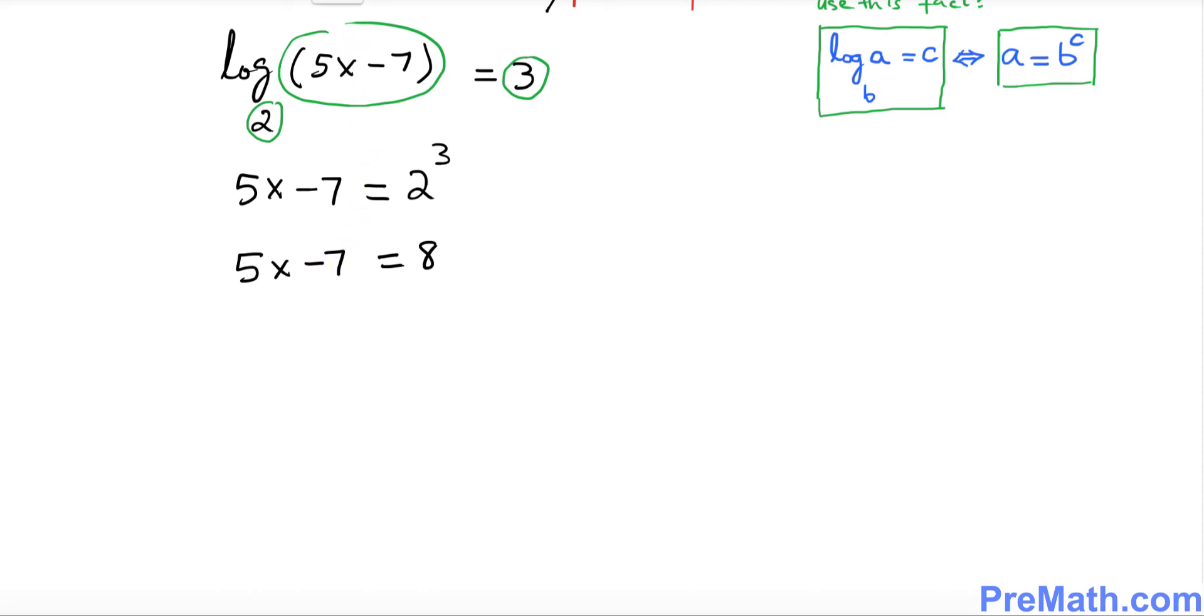Now we want to solve for x. So we want to add 7 first on both sides. So this negative 7 is gone. 5x equals to 15. I want you to divide both sides by 5. So x turns out to be 3 as our solution.